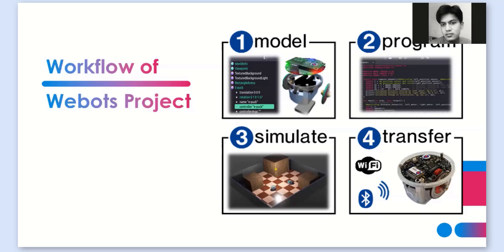For example, if I make an obstacle-avoiding robot, I keep the robot in a world and place various obstacles in front of it to test whether it avoids all of them. If it doesn't, I fail; if it successfully avoids all obstacles, I succeed. We test all the things according to the plan we previously made, and if we succeed, lastly we transfer that to a real-life robot, choose different hardware, and begin prototyping. This is the basic workflow of using a Webots project.